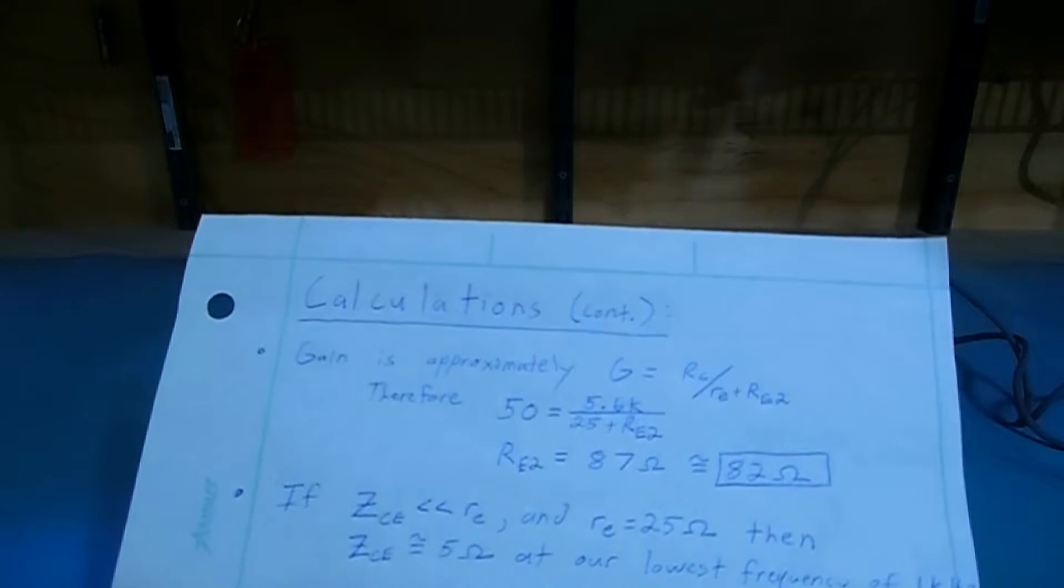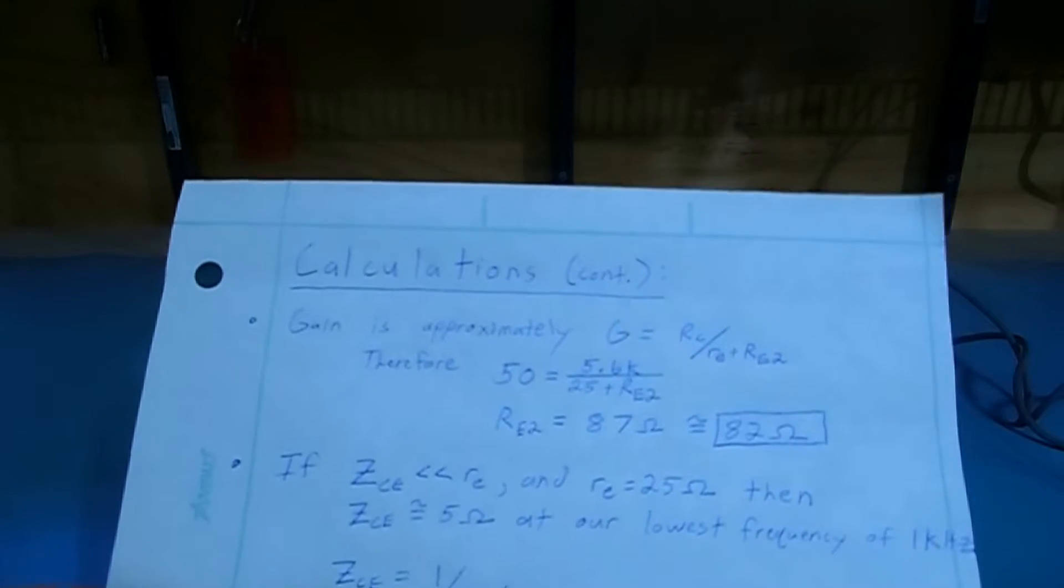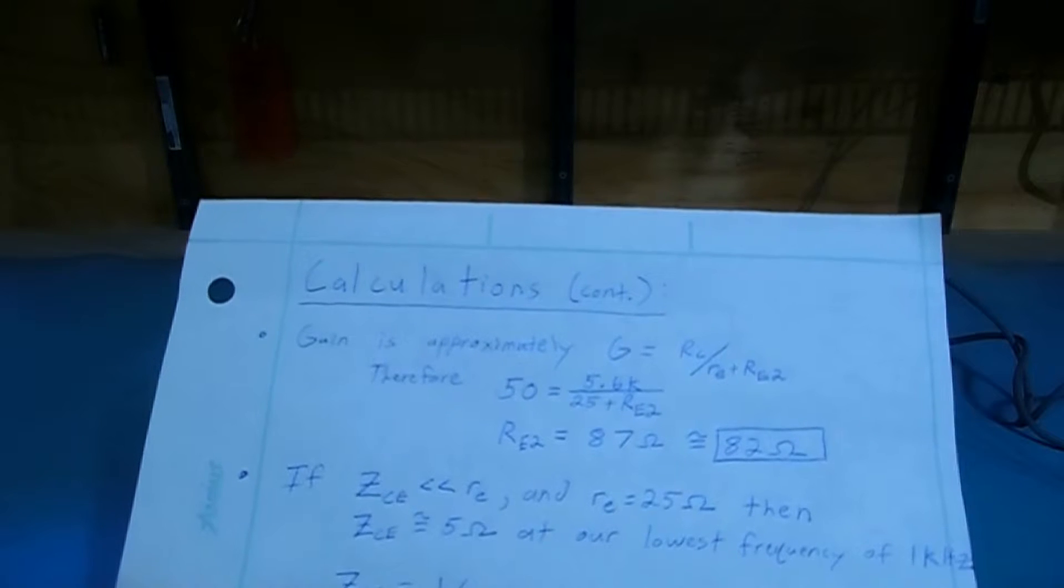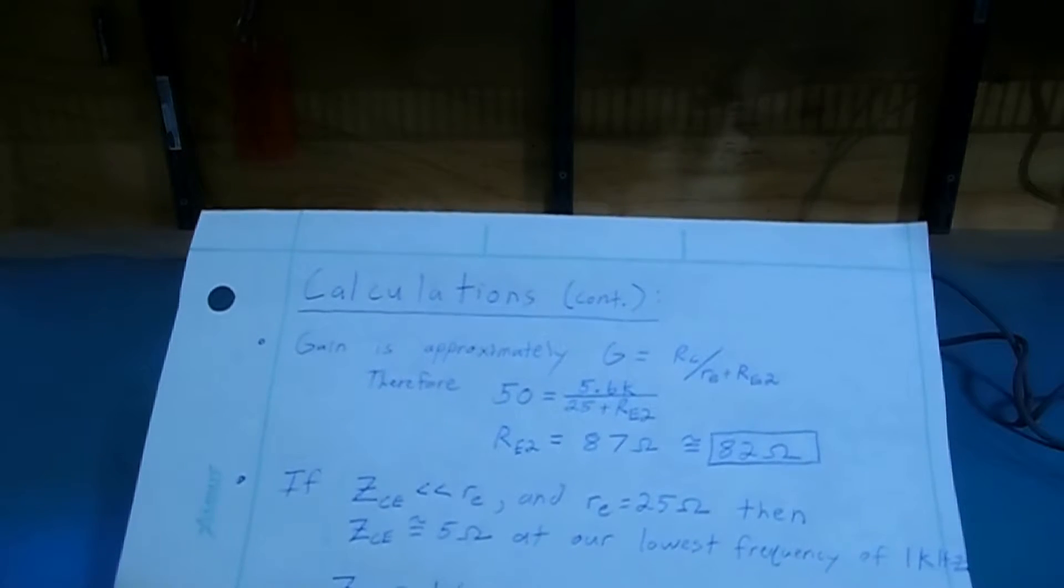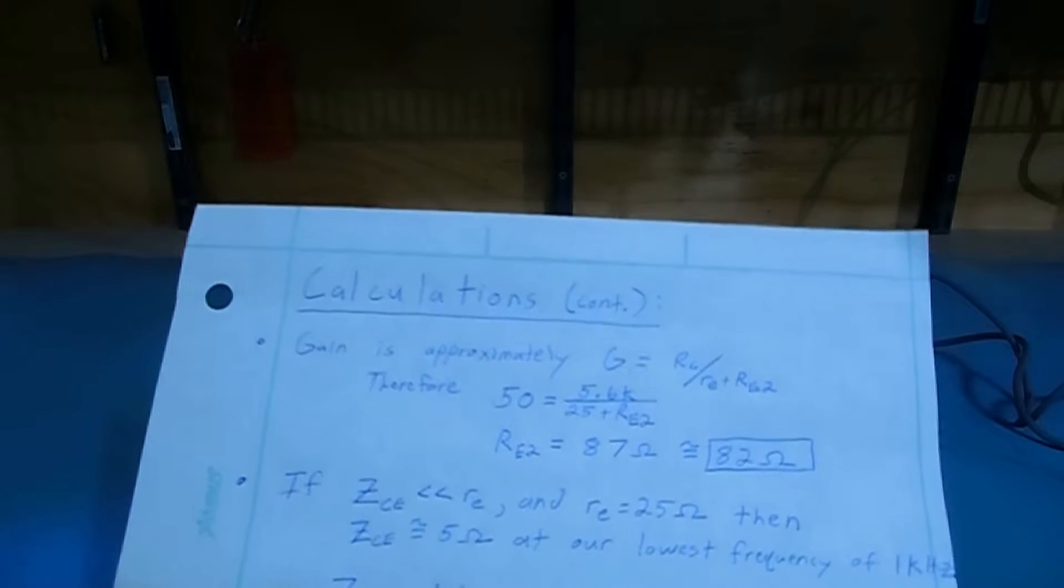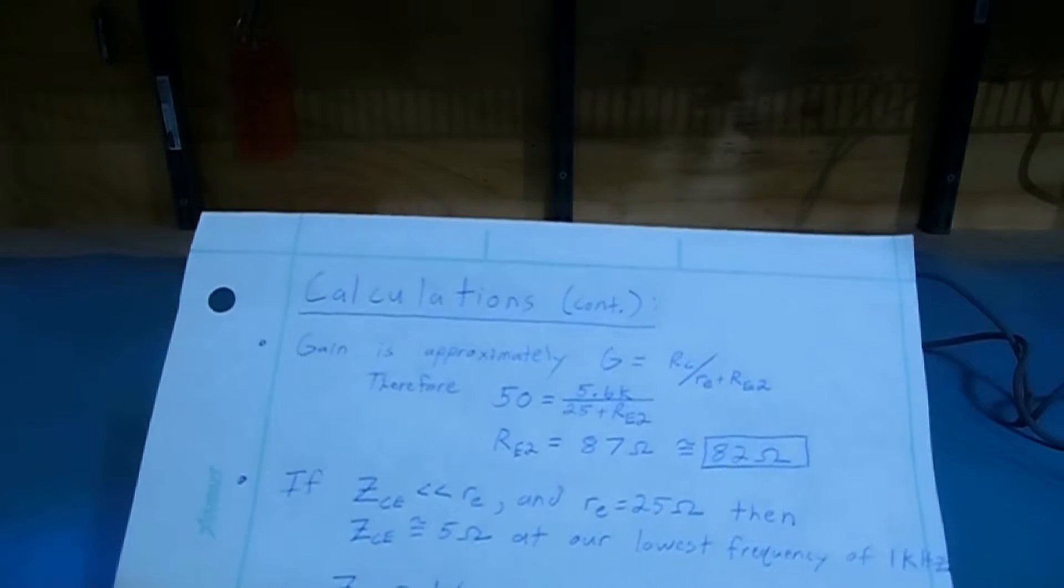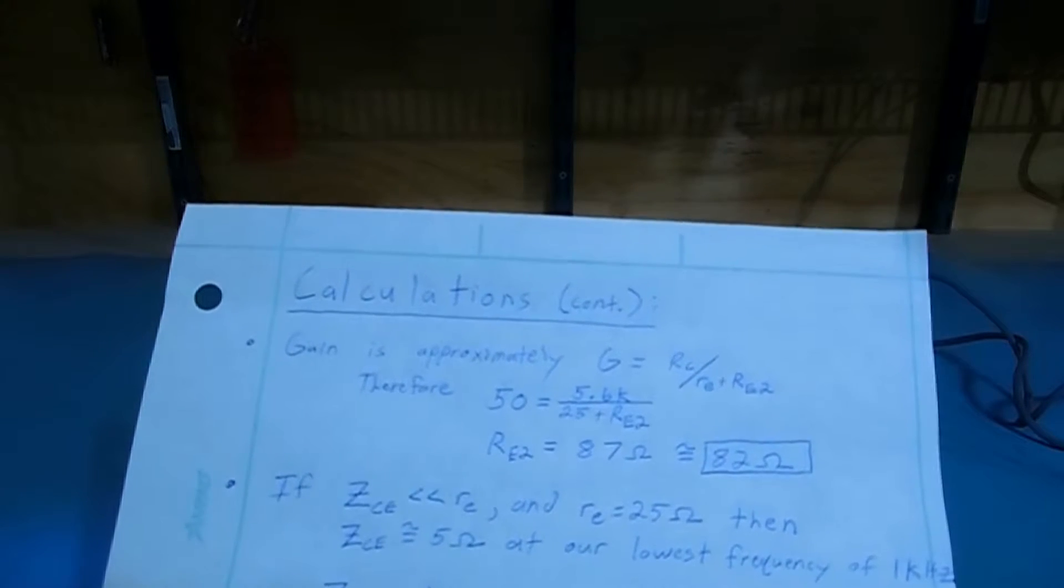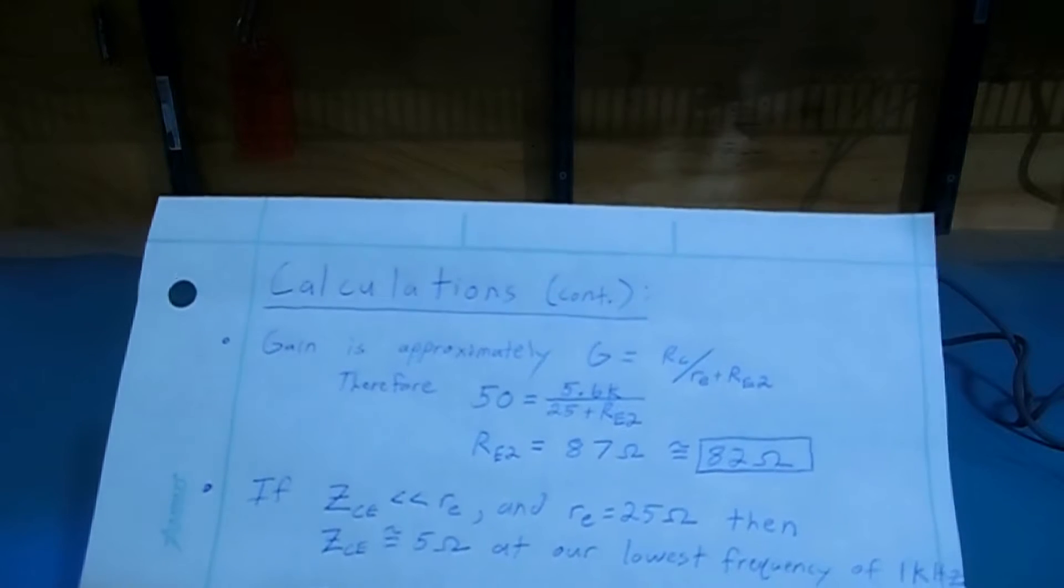In this case, our signal is going to mostly flow through RE2 and not RE1, because RE1 is 3,000 ohms, and as you can see, if emitter resistance was 3,000 ohms, the gain would be nowhere near 50, so we can just presume we can ignore RE1 in this case and focus solely on the only other two resistances for the signal in the emitter, which are little re and RE2.